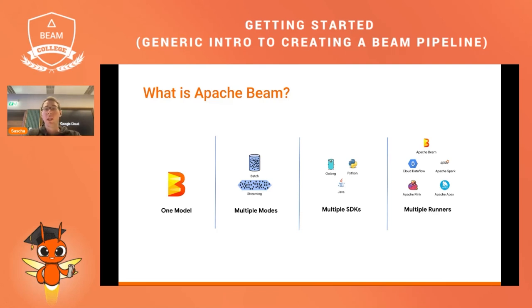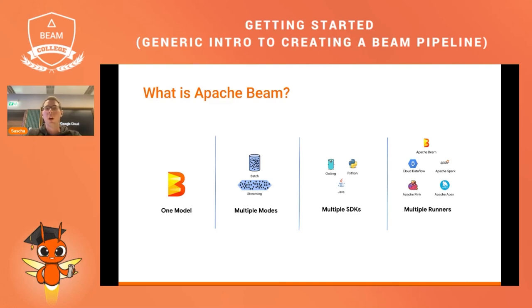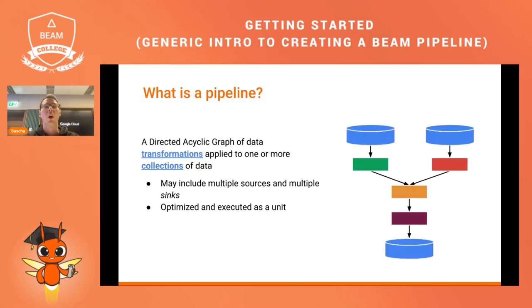Currently Beam offers three SDKs in Go, Python, and Java, and it runs on multiple runners such as Google Cloud Dataflow, Apache Spark, Apache Flink, Apache Apex. For local development it also offers the Direct Runner, which you can use to test or debug your data processing pipeline on your workstation.